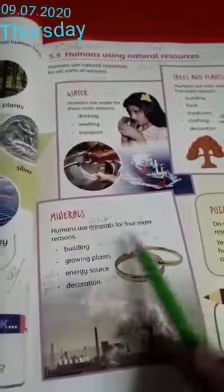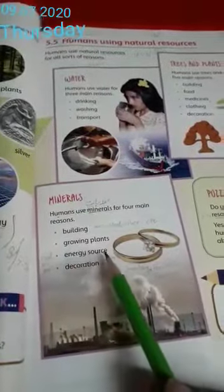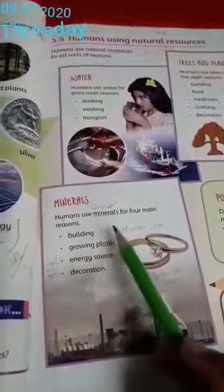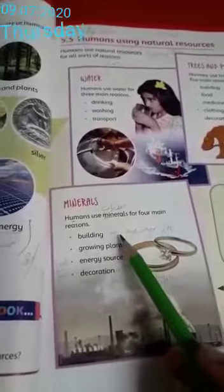Next ہے minerals. Minerals students کہتے ہیں معدنیات کو. Humans use minerals for four main reasons. انسان جو ہیں معدنیات کو چار بنیادی وجوہات کی بنا پر use کرتے ہیں — number 1 پے ہے building، number 2 پے ہے growing plants، number 3 پے ہے energy source، number 4 پے ہے decoration. Building میں minerals کیسے use کرتے ہیں — جب ہم building تیار کرتے ہیں اس میں iron، steel، silver اور بہت سے ایسے minerals ہیں جو ہم زمین سے حاصل کرتے ہیں۔ انہیں building materials میں use کیا جاتا ہے.